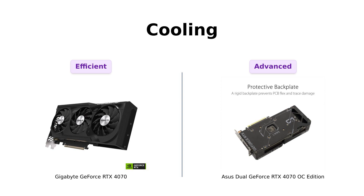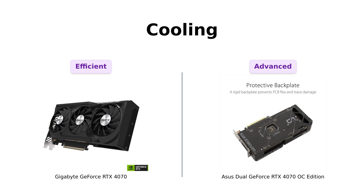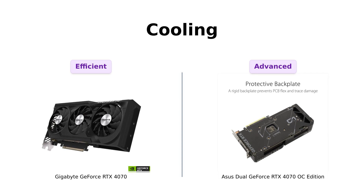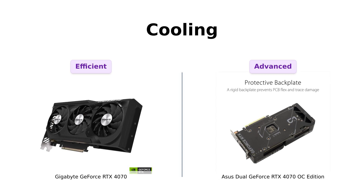On the other hand, the Asus Dual GeForce RTX 4070 OC Edition boasts an axial-tech fan design with a smaller fan hub, longer blades, and a barrier ring that increases downward air pressure. Its 2.55-slot design maximizes compatibility and cooling efficiency, making it an excellent choice for small chassis setups. Additionally, the zero decibels technology allows for a quieter gaming experience, and the dual ball fan bearings provide enhanced durability.